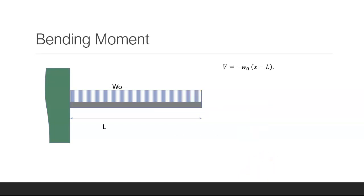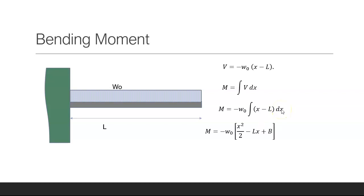If I want to get the bending moment, we need to integrate the shear force. When I integrate minus w naught times (x minus L), I get x squared over 2 minus Lx plus some constant of integration B.